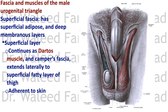Now we'll discuss the fascia and muscles — first of the male urogenital triangle, then compare to females. The fascia has superficial and deep components. Remember the fascia we studied on the anterior abdominal wall: the superficial fascia had two layers — the superficial layer, Camper's fascia, and the deep layer, Scarpa's fascia — and these extend here to the external genitalia.